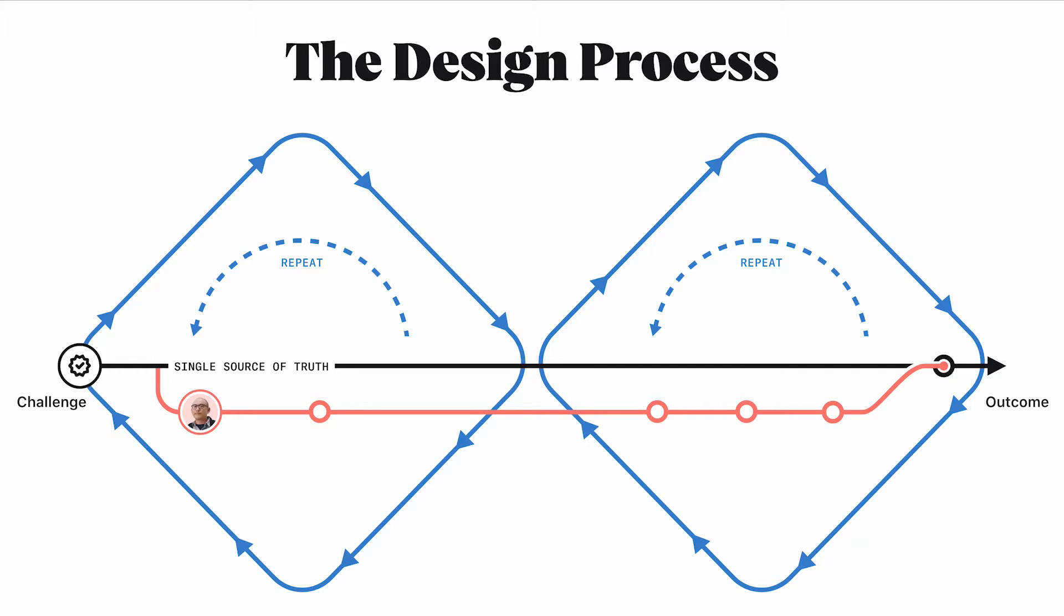One of the most recognizable models of the design process is the double diamond model, which has been the industry standard for the past 15 years. The two diamonds represent the method of exploring many facets of an idea, which is called divergent thinking, and then taking focused action, which is convergent thinking.